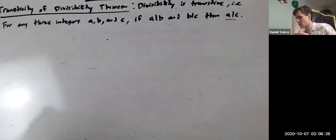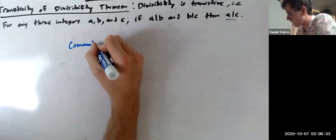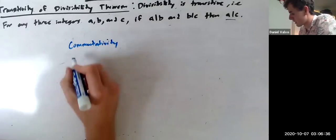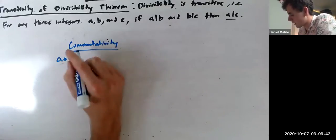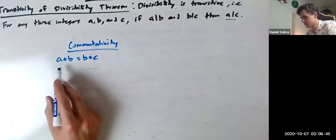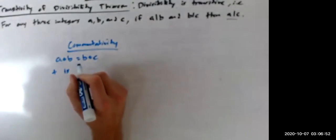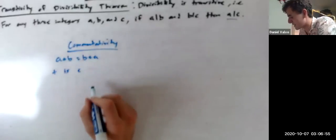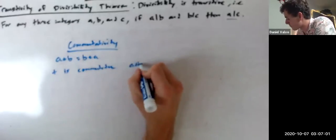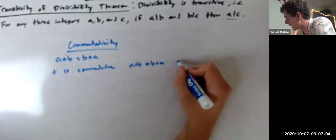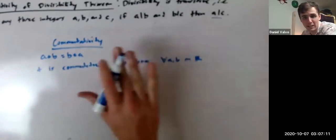So commutativity, what that means is that for some operation, A times B equals B operation C. Wait, professor, shouldn't it be B times A? Oh yeah, my bad. Thank you very much. So plus is commutative because A plus B equals B plus A for all A, B in the real numbers and the complex numbers, anywhere we're extended to really.